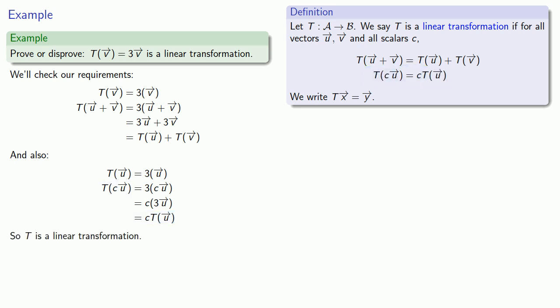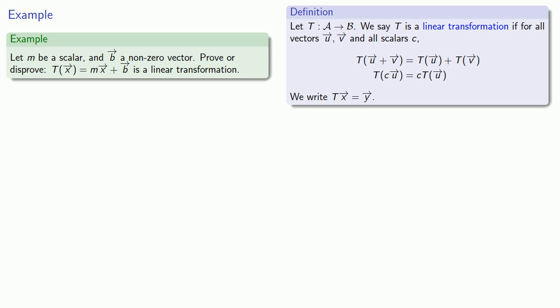Since everything we need is in fact present, we can conclude that T is in fact a linear transformation. Let's take a look at another problem where we have a different transformation.